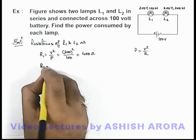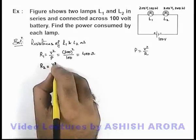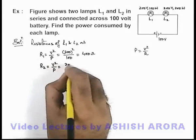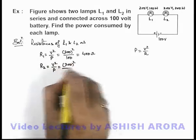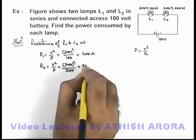Similarly, for lamp L2, we can find out its resistance by using V squared by P. This is 200 squared by 200, that'll be 200 ohms.